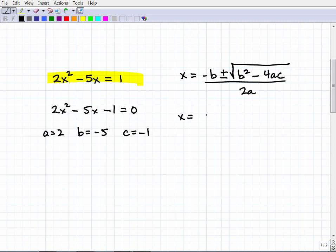So x is going to be equal to negative B. So that's negative of a negative 5. A lot of students make a mistake. They go like, oh, it already has a negative there, I'll just put negative 5. That's incorrect. So the plus or minus, square root, B². So that's going to be (-5)². Always put things in parentheses. Minus 4 times A, which is 2, times C, which is -1, all over 2A, which is going to be 2.